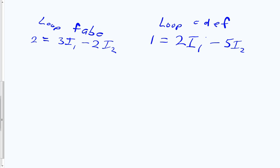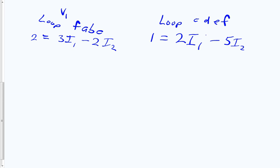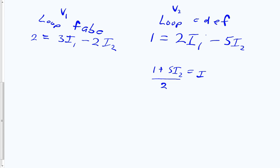Now let's solve. I have two unknowns, I1 and I2, and I have two equations. The left loop equation is 2 equals 3·I1 minus 2·I2 (for battery 1), and the right loop equation is 1 equals 2·I1 minus 5·I2 (for battery 2). I'll solve one equation for one variable and substitute into the other. From the right loop equation: 1 plus 5·I2 equals 2·I1, so I1 equals (1 plus 5·I2) divided by 2.